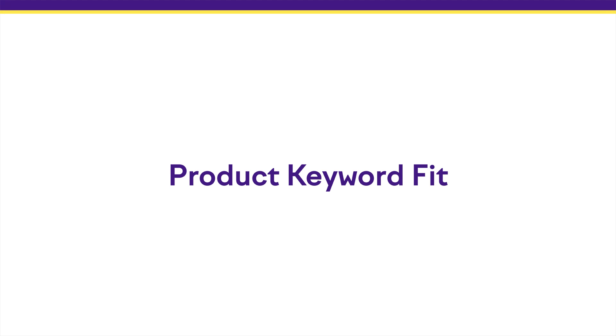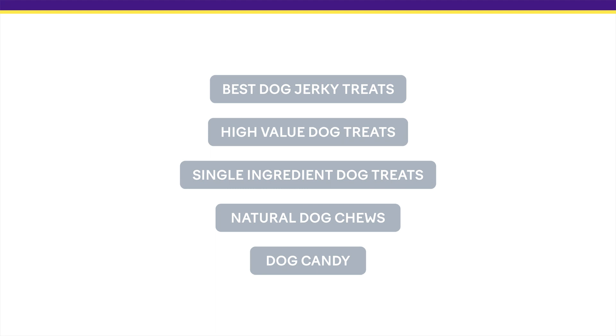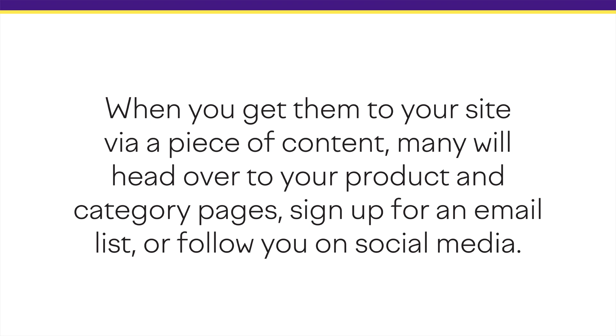The second element of earning potential is called product keyword fit — does this keyword have anything to do with what you sell? The closer the keyword is to your product or service, the better that searcher is going to convert. That said, you don't always need to target keywords directly related to what you sell. For example, if you sell organic dog treats, a keyword like 'organic dog treats' is a perfect fit but probably too competitive. Keywords with a slightly weaker fit can still attract health-conscious dog owners — your target customer — who may then visit your product pages, sign up for your email list, or follow you on social media.